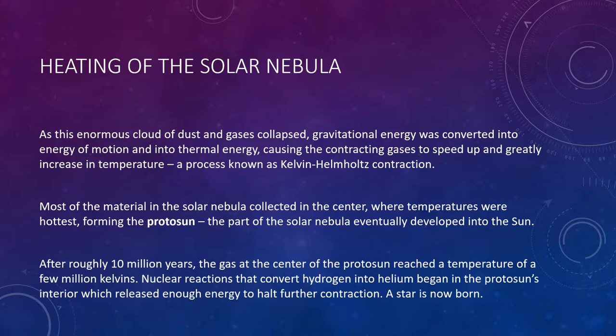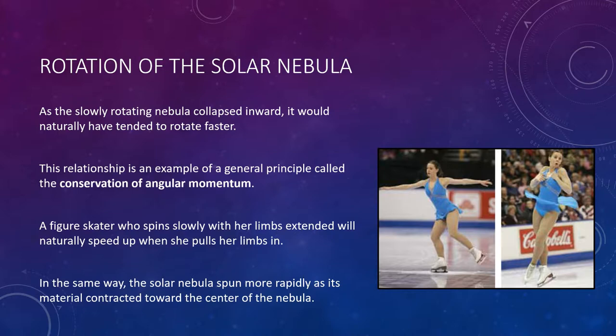The onset of nuclear reactions defines the end of any protostar and the beginning of a new star. Nuclear reactions continue to the present day in the interior of our sun, and are the source of all the energy the sun radiates into space. The solar nebula heated up enough to form our sun in the center—but it also rotated.